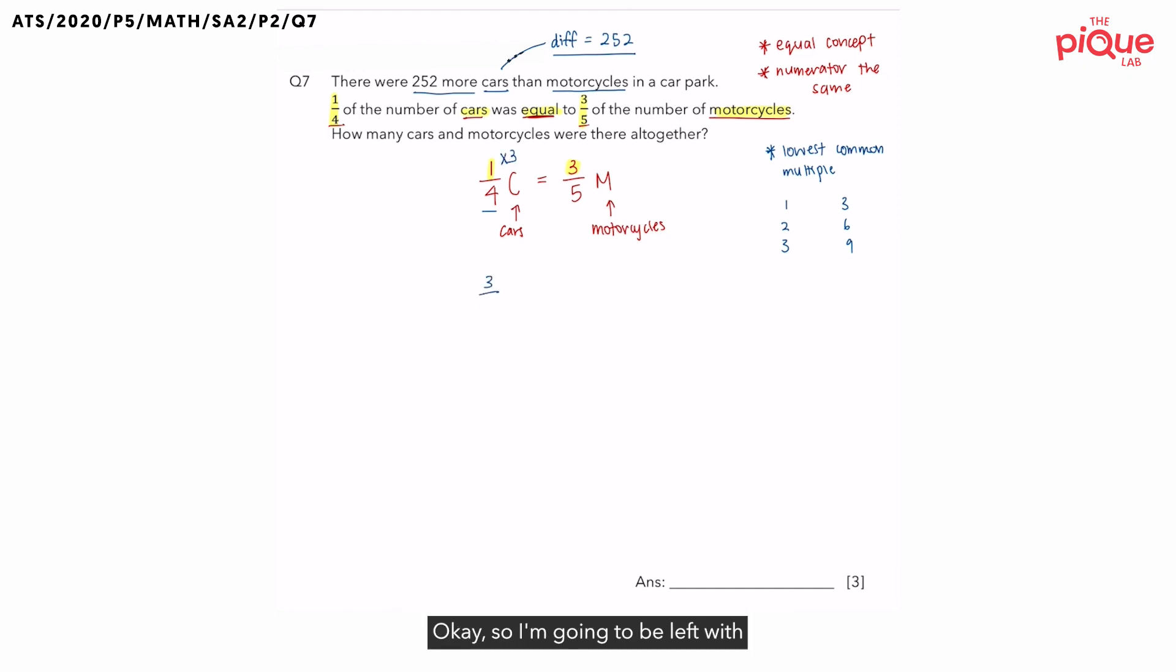So, I'm going to be left with three-quarter of cars is equal to three-fifths of motorcycles. Is this correct? What do you notice? One quarter of the cars is supposed to be equal to three-fifths of the motorcycles. In the bottom, three-quarter of the cars is equal to three-fifths of the motorcycles. This information doesn't tally, right? Now, one-quarter is not the same as three-quarter. So, remember that whatever you do to your numerator,